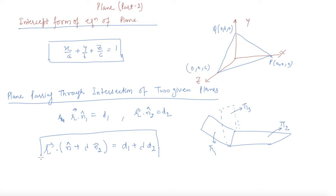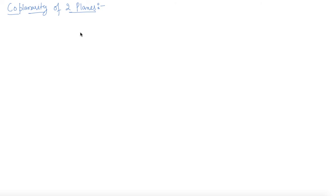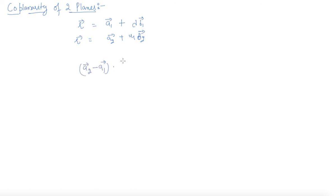This is the equation of the plane passing through the intersection of two planes. Now we will discuss about the co-planarity of two lines. We need to prove whether two lines are co-planar or not. If the two lines satisfy this equation — (a2 − a1) · (b1 × b2) = 0 — we say that the two lines are co-planar; otherwise they are not.